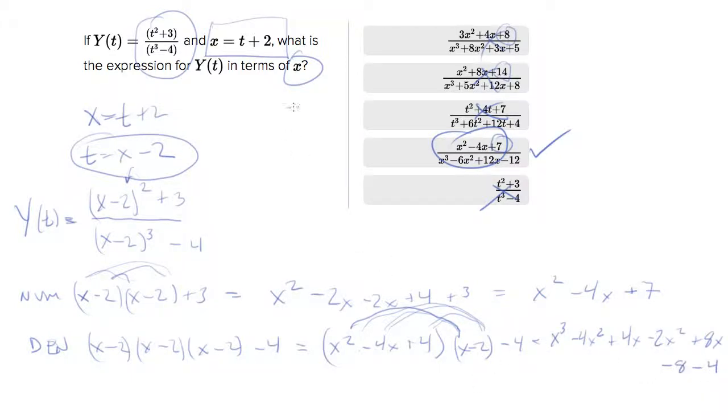So collecting like terms, I'm going to do that in a different color. We've got the x squared term to collect, you've got the x term to collect, and you have the numerical terms to collect. What that equals is x cubed minus 6x squared plus 12x minus 12, which is in fact the denominator on our answer. So the numerator denominator both match, we did pick the correct one.